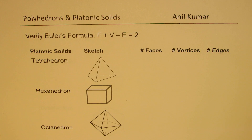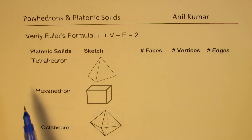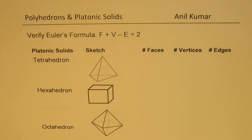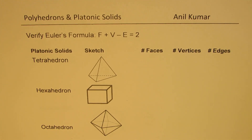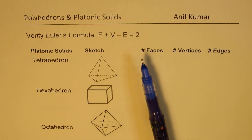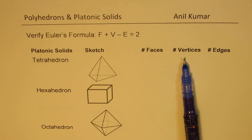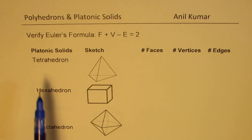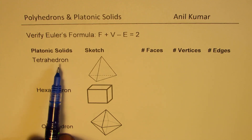As you know, there are 5 platonic solids: tetrahedrons, hexahedrons, octahedron, dodecahedron, and icosahedron. We'll go through them one by one and figure out how many faces, vertices, and edges they have, and also verify the formula. So let's begin with the tetrahedron.